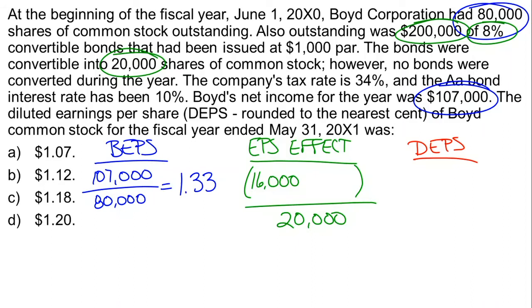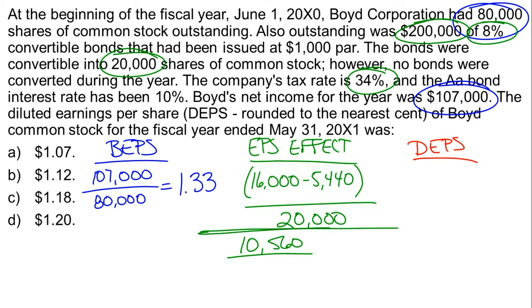In diluted EPS, we ask hypothetically: if the bonds had been converted, what would EPS have been? With $16,000 of higher income, they would have paid income taxes of 34%, which is $5,440. That leaves $10,560 of new income available. There would also have been 20,000 additional shares outstanding, so the EPS effect of the convertible bond is approximately $0.528 — about 52 to 53 cents.